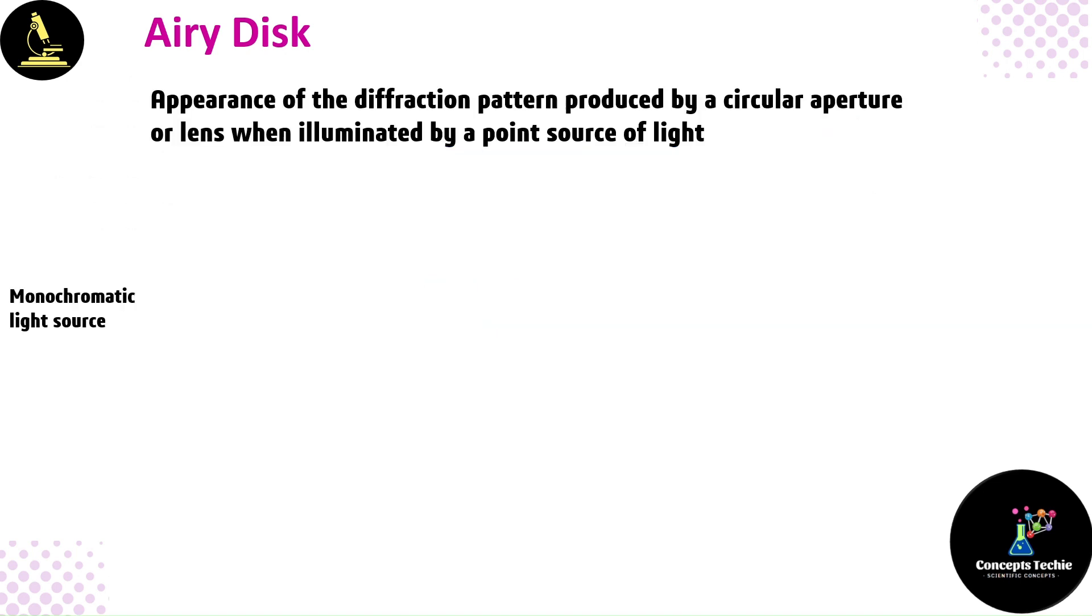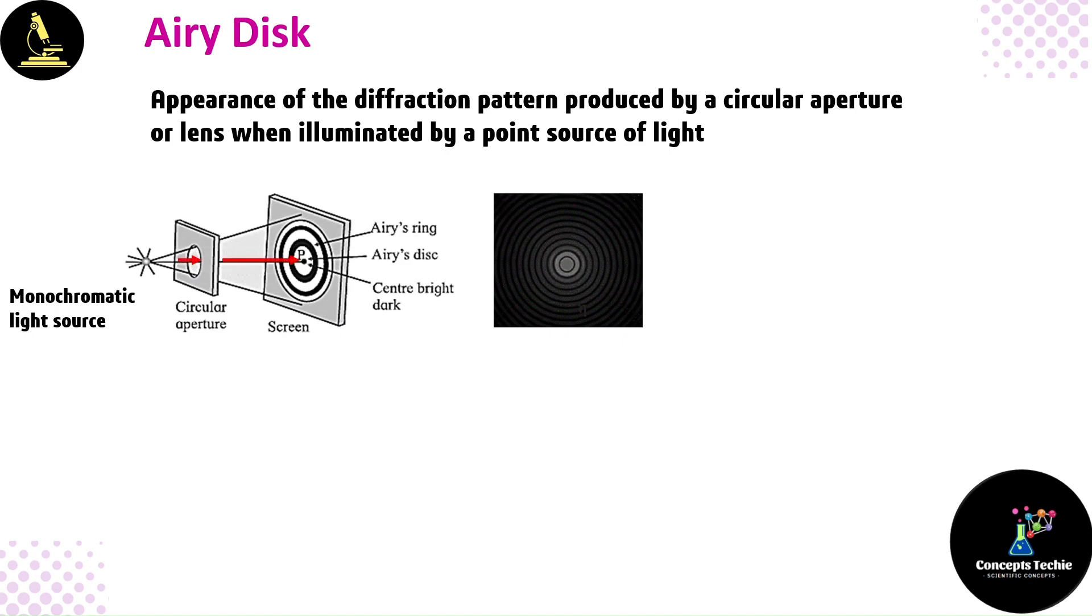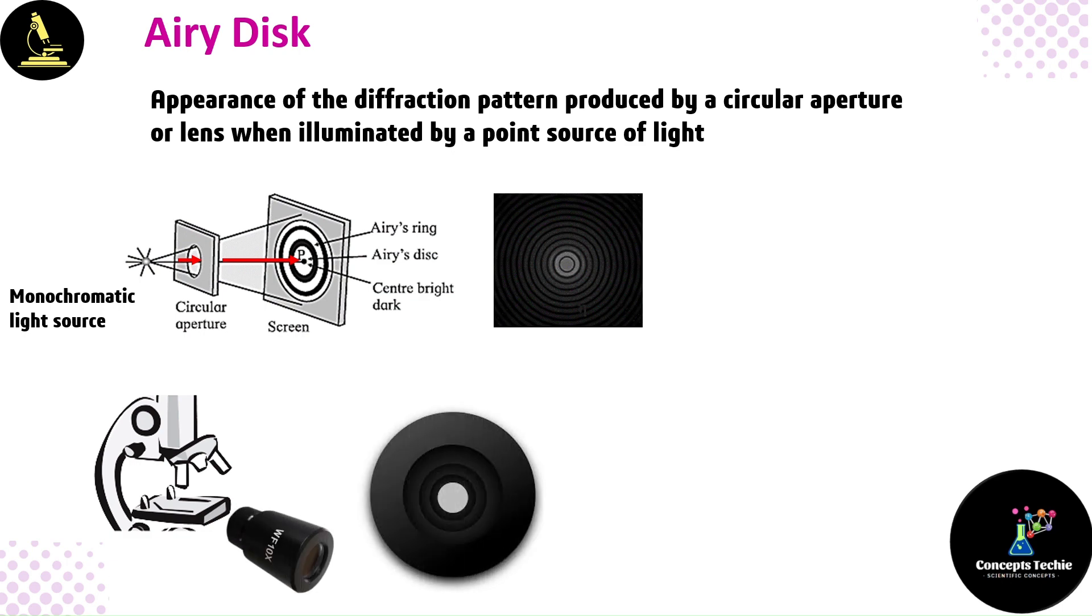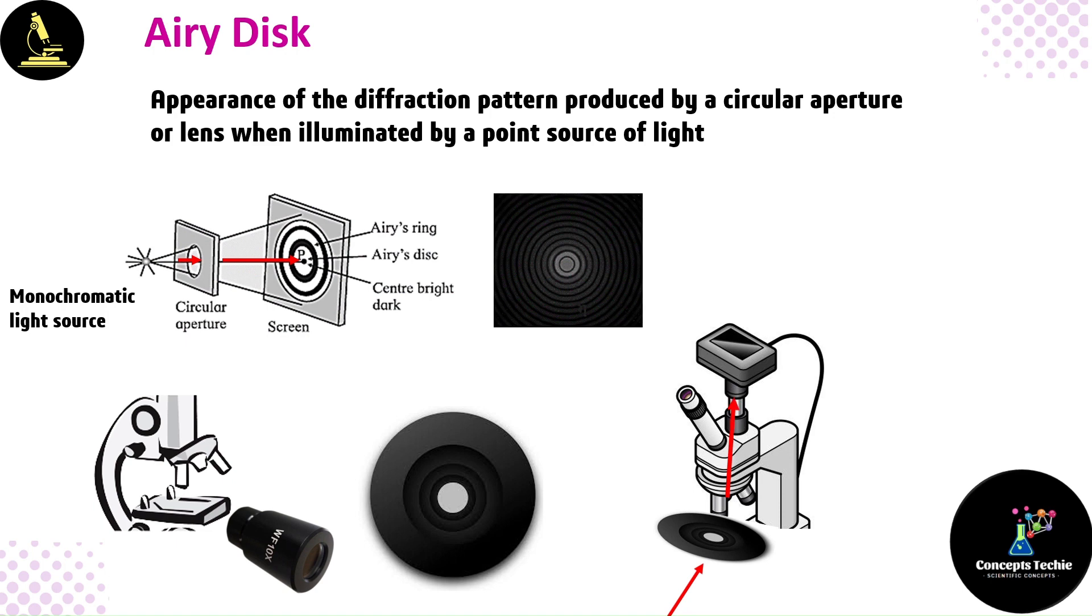So the Airy disc refers to the diffraction pattern formed by a point source of light as it passes through the aperture of the microscope's objective lens. In microscopes, each lens has a finite adjustable opening, in a camera lens, that controls the amount of light reaching the camera's image sensor or film. The resulting diffraction pattern is a bright region in the center together with a series of concentric rings of decreasing intensity around it.